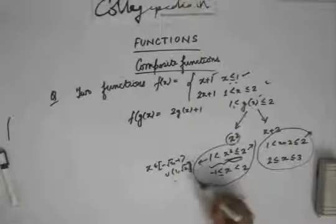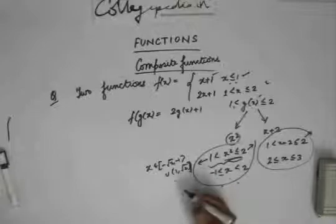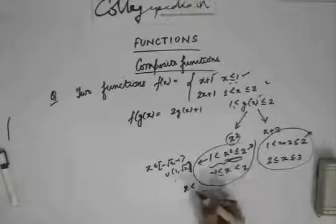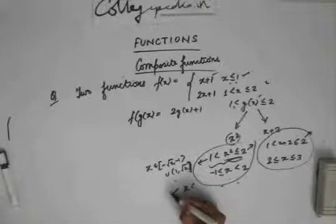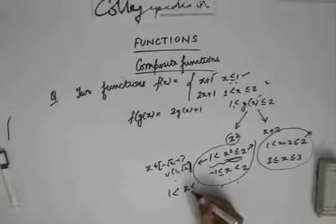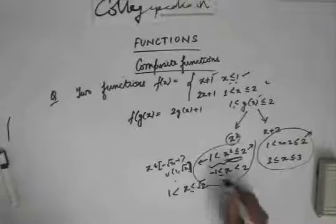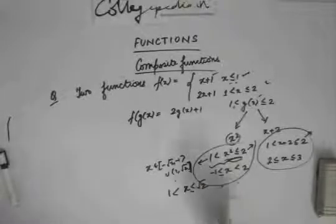Now when I take the intersection of these two intervals, I get x lying between 1 and 2. So this is what I get from the first case.